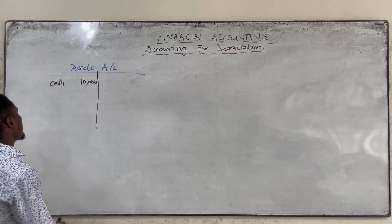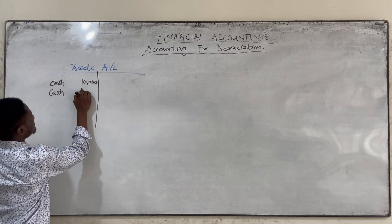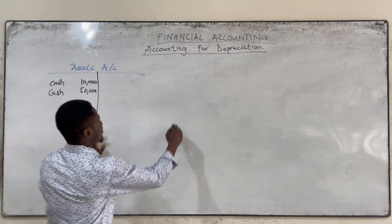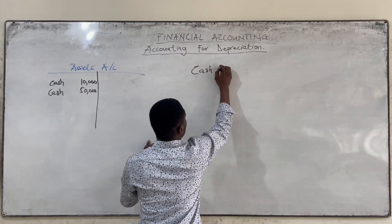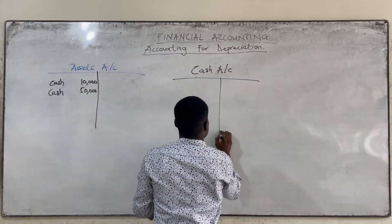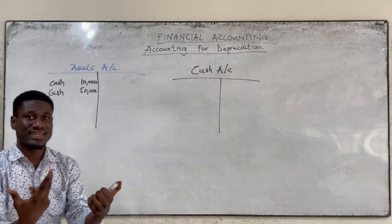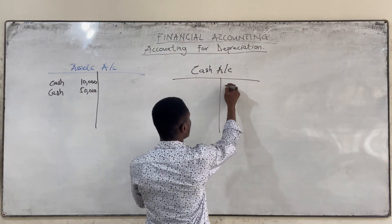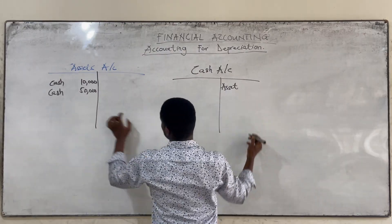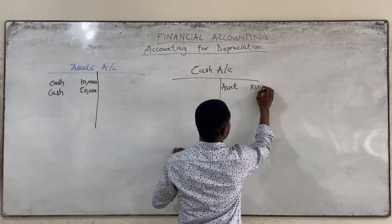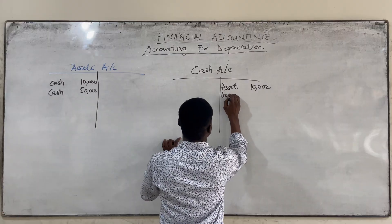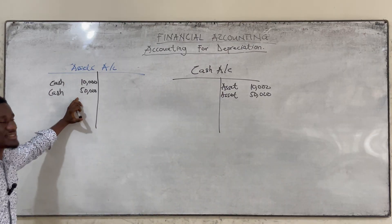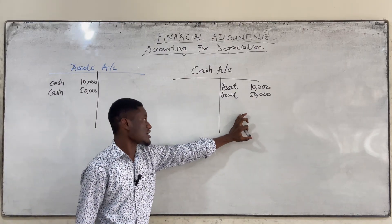Let's say we bought another asset for 50,000 — we are going to debit it. Whilst we are debiting here, we have another account called the cash account. We know that we are buying the assets, so our cash is reducing. When our cash is reducing, we will credit cash. So let's say we had 10,000 and also bought 50,000. Whilst we are debiting our asset account, we are also crediting our cash account.